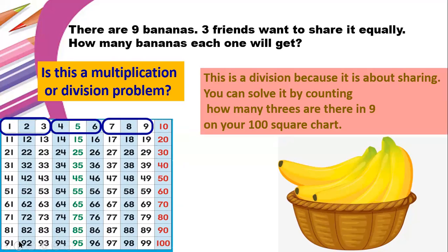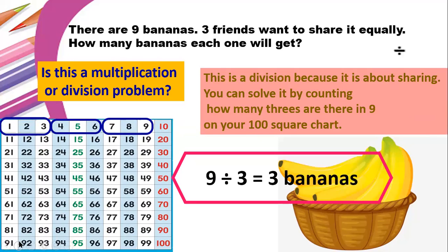So in 9 there are 3 threes. That means 9 divided by 3 is 3. So 3 bananas.